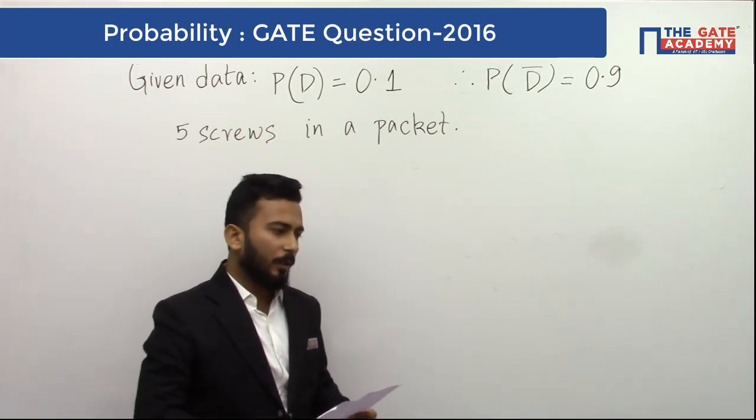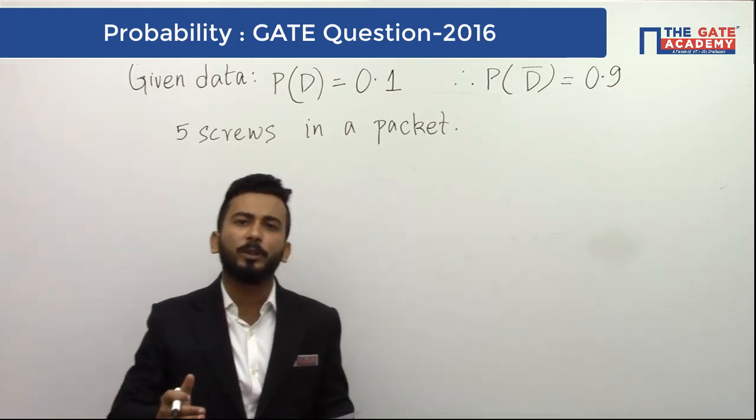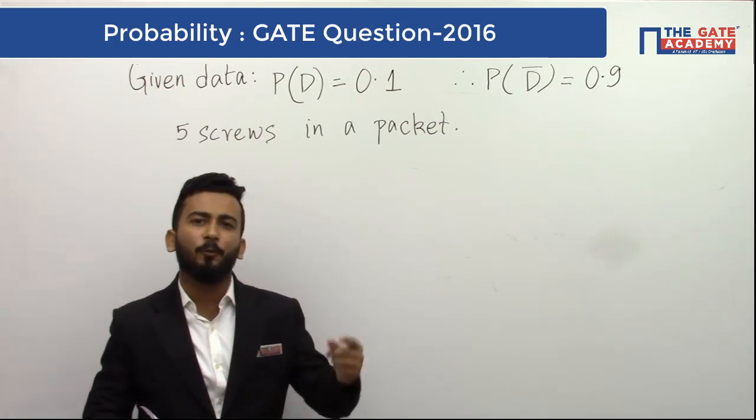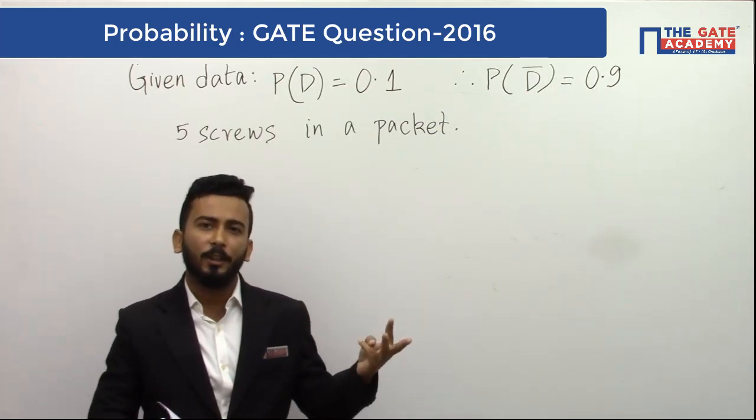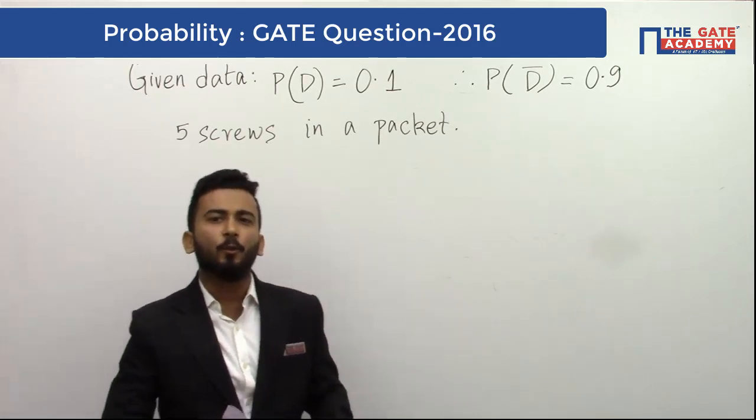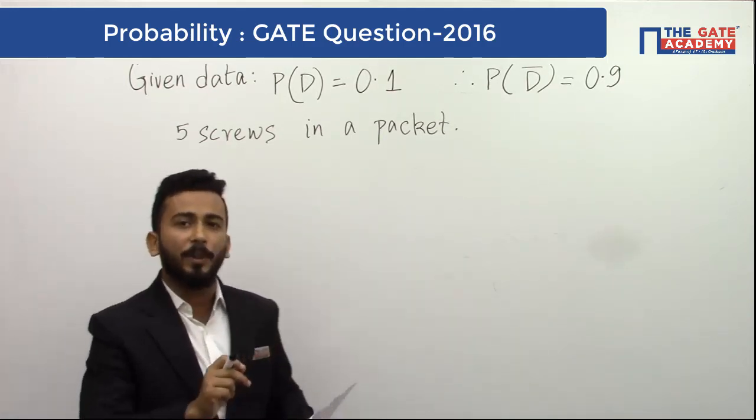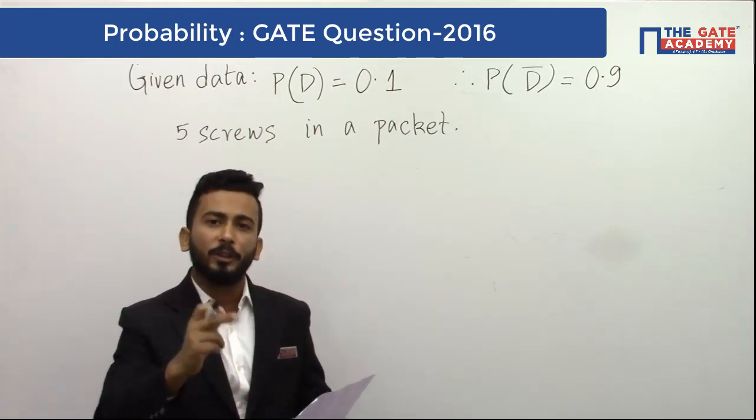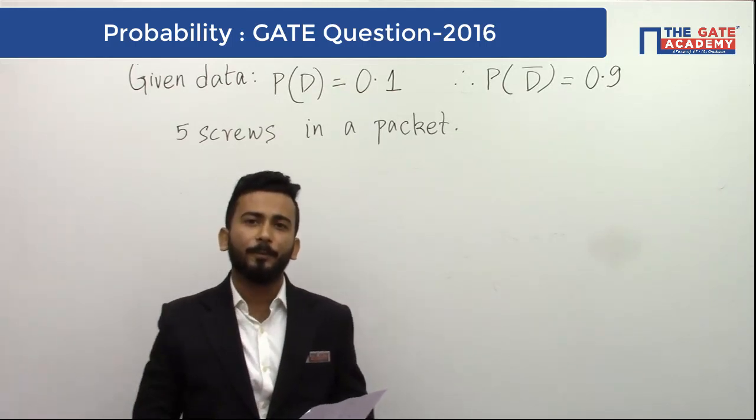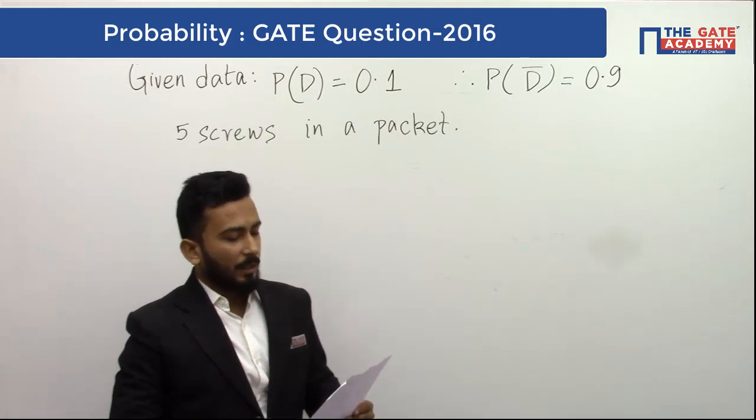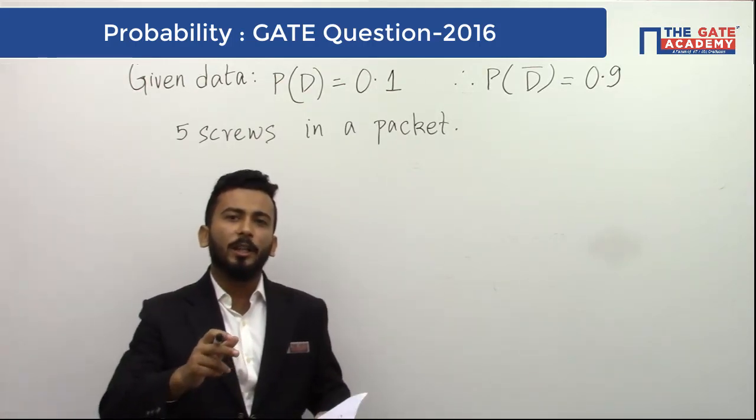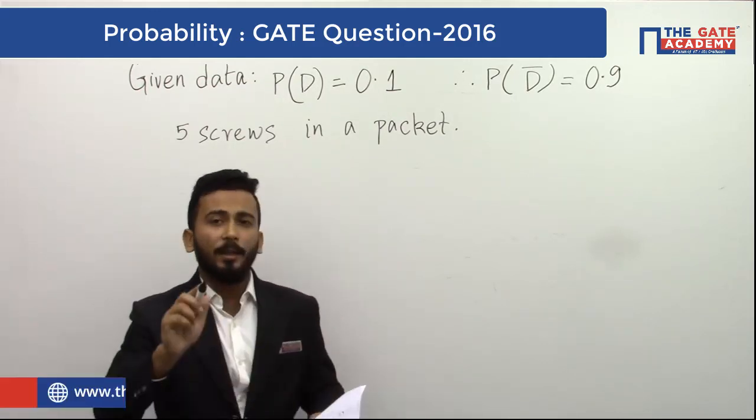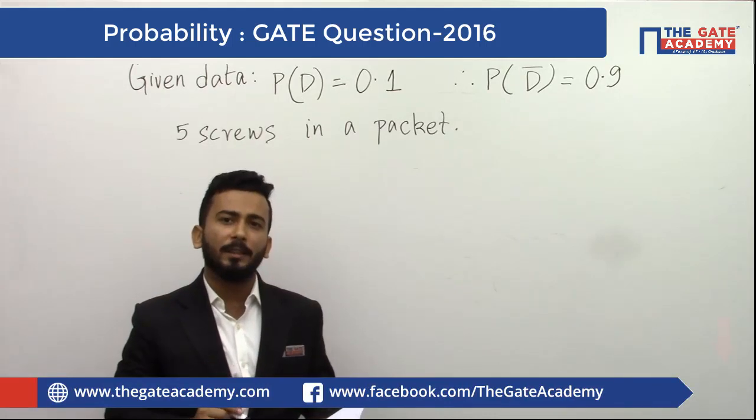So when there are five screws in a packet, the number of defective screws can be 1 or 2 or 3 or 4 or 5. We need to find the probability that one screw may be defective, 2 screws may be defective, 3, 4 or 5. But this would be time taking. Why not we find that there are no defective screws and then we can subtract that from 1. Let us see.